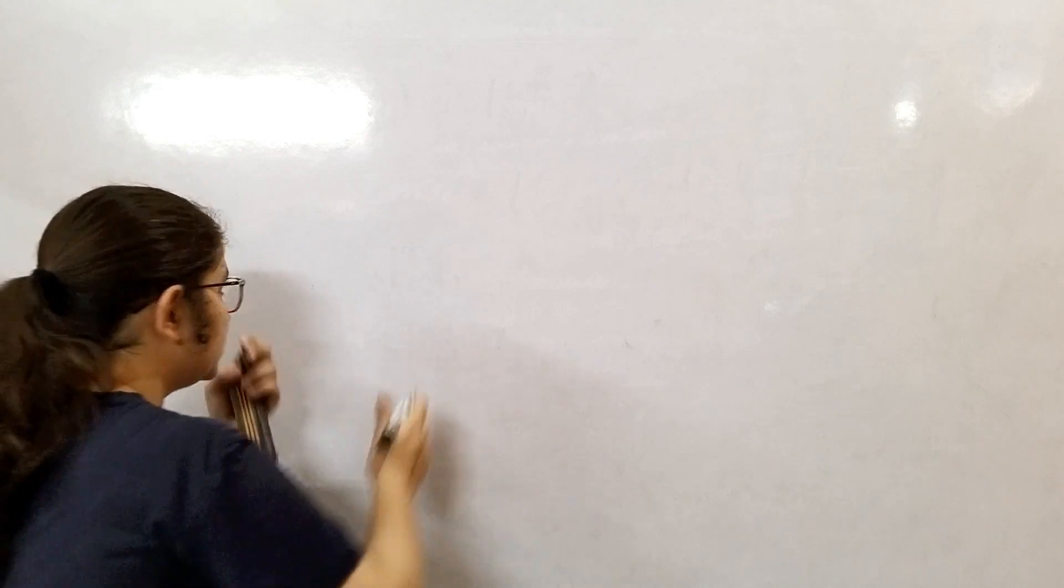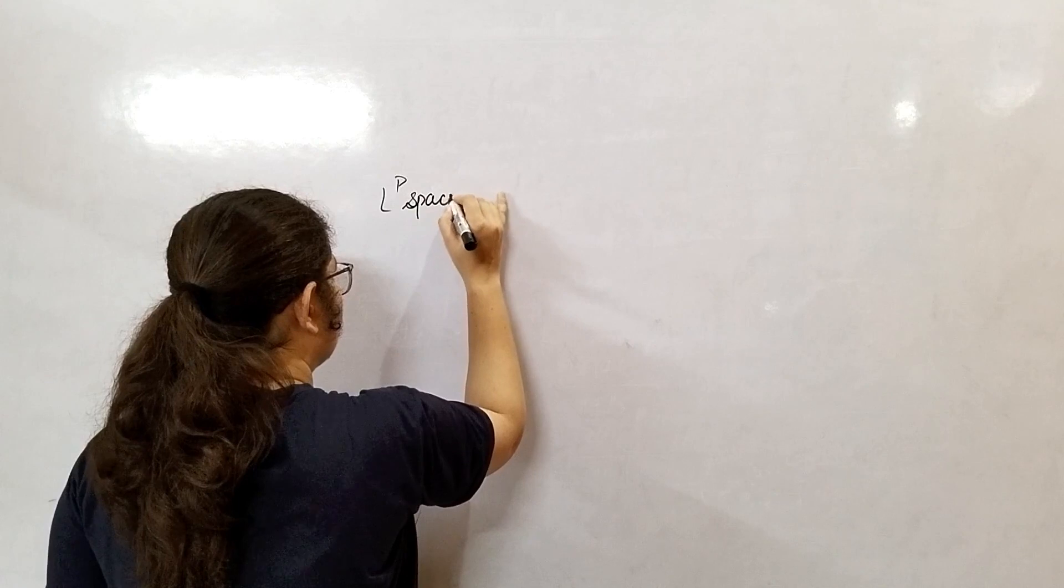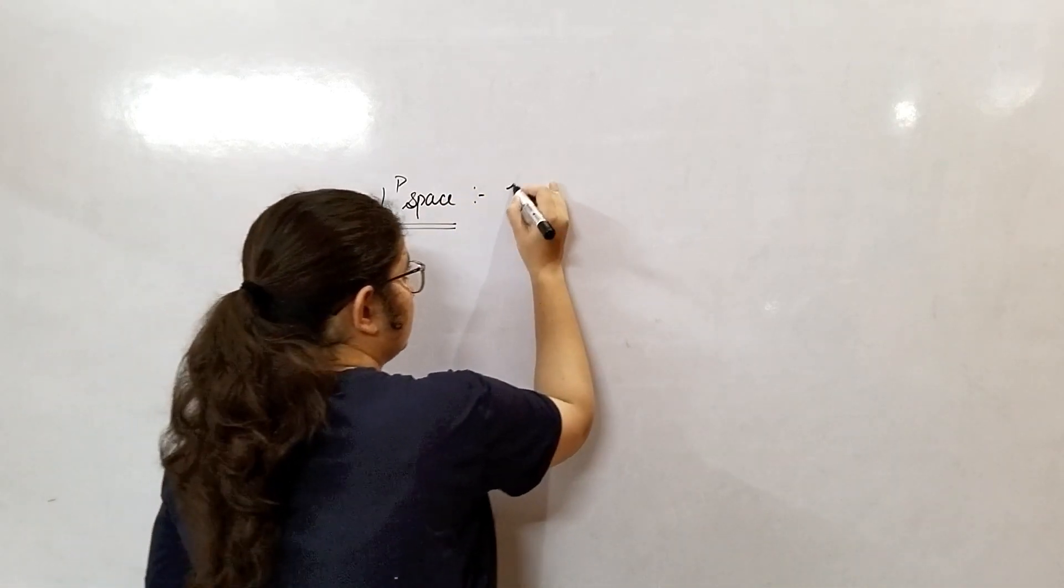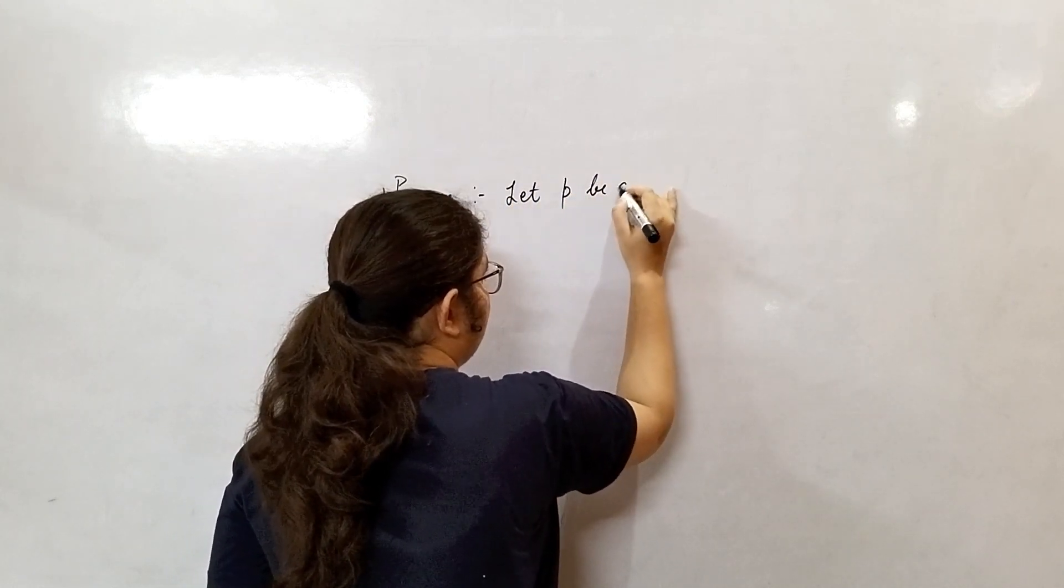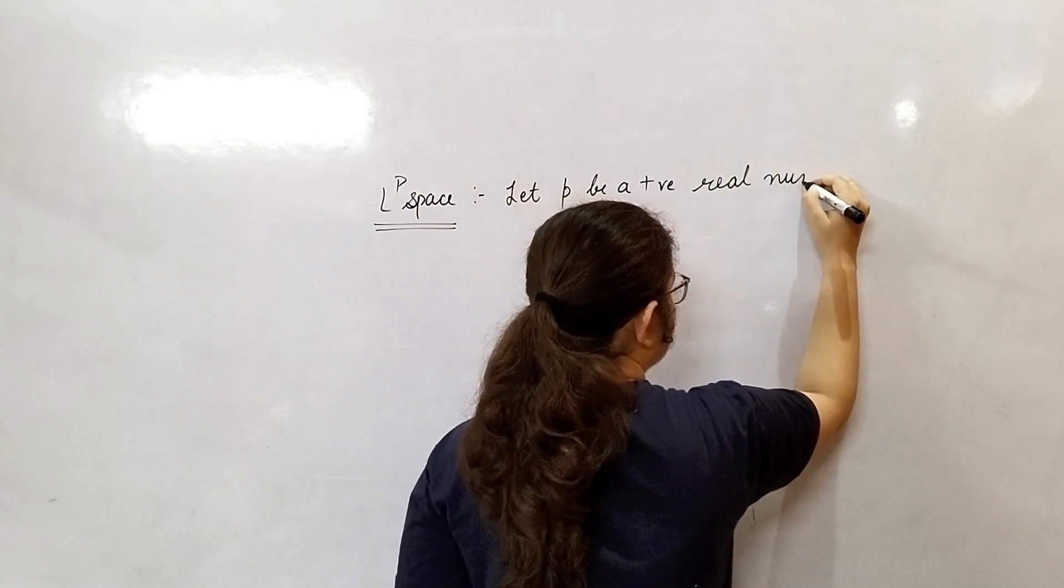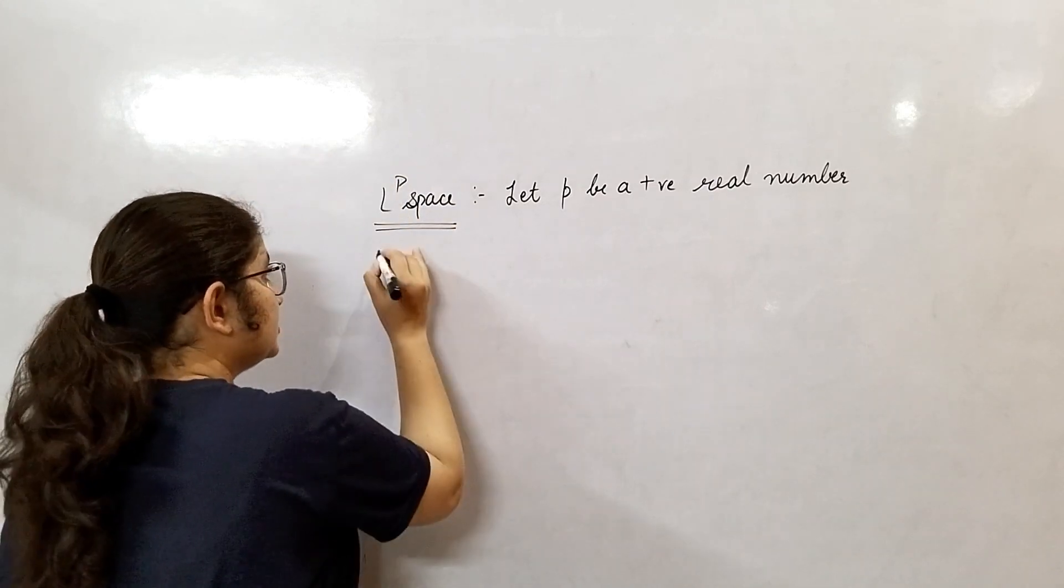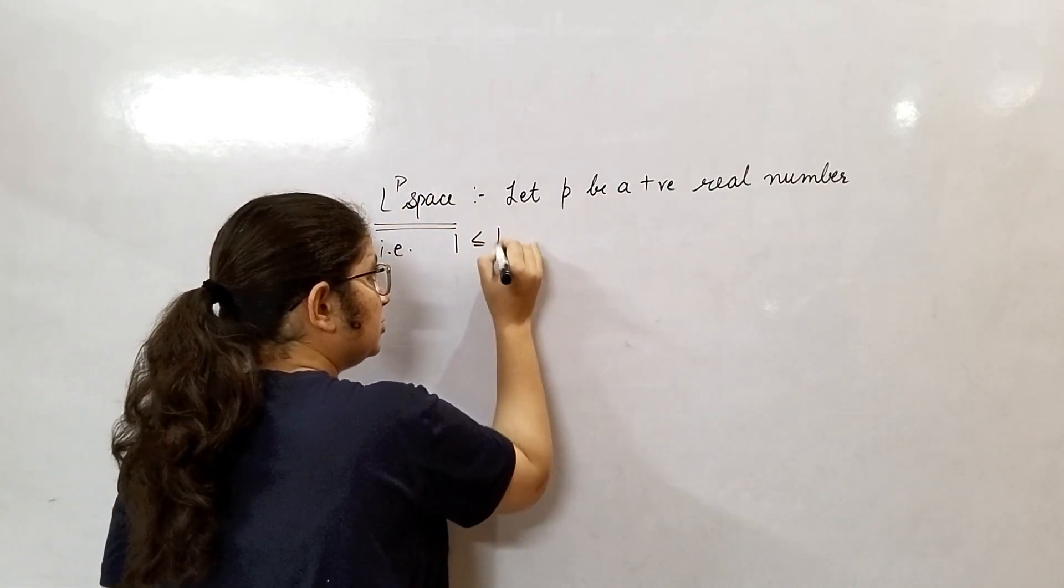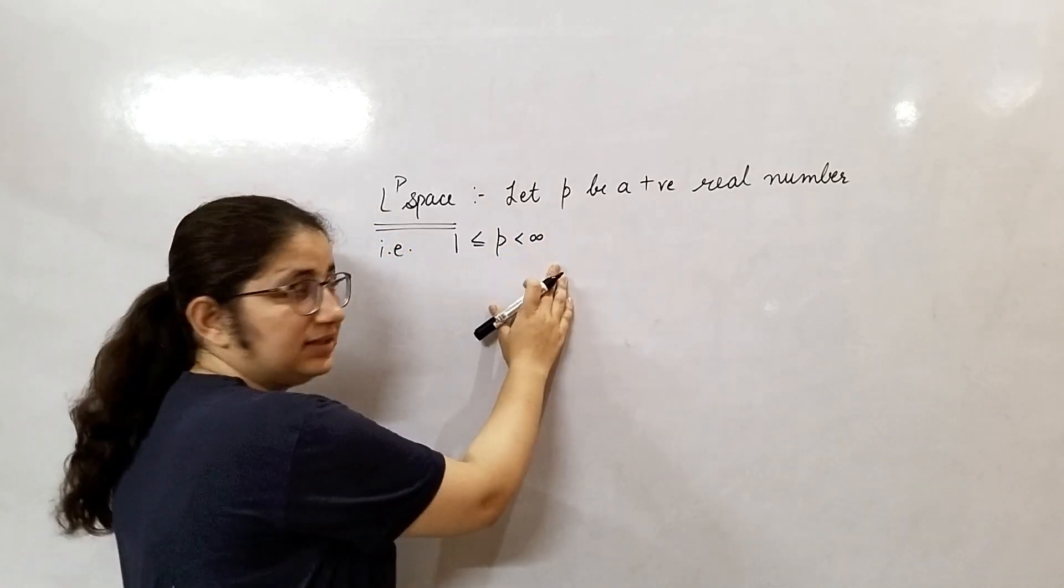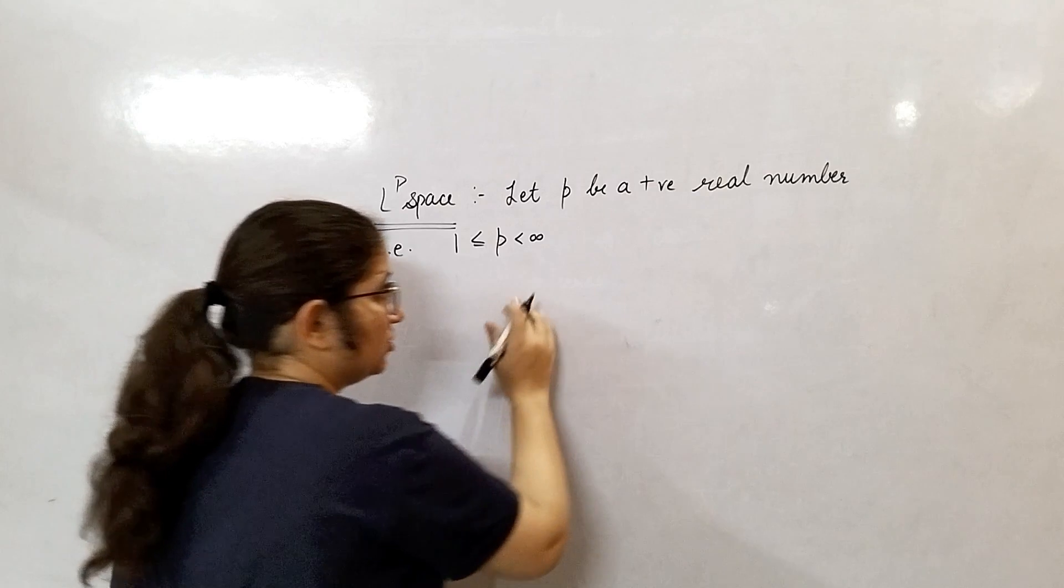So firstly let me define what is LP space. Let P be a positive real number, that is 1 less than equal to P less than infinity. Every time whenever you pick your P that becomes finite. That's why we have written here P is less than infinity which means P is finite.